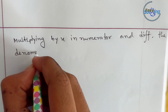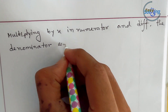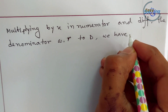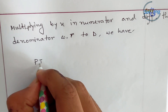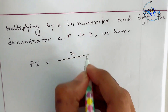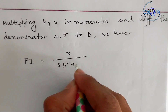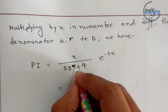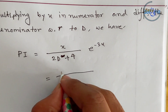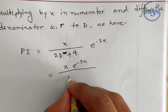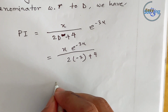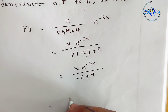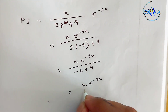Since this is a case of failure, we multiply by x in the numerator and differentiate the denominator with respect to D. The PI becomes x times e to the power minus 3x divided by 2D plus 4.